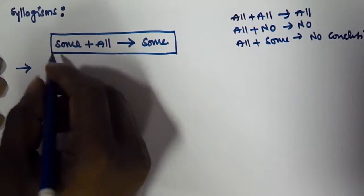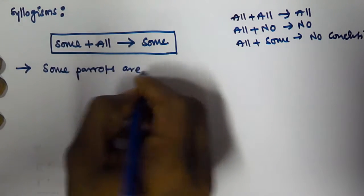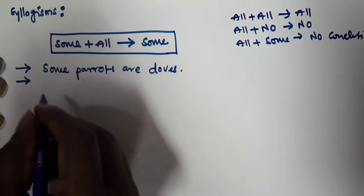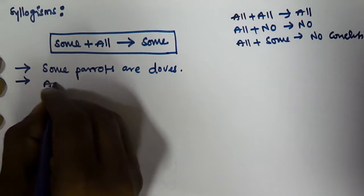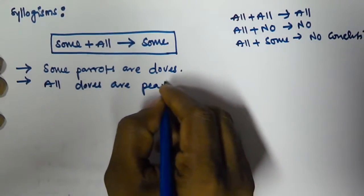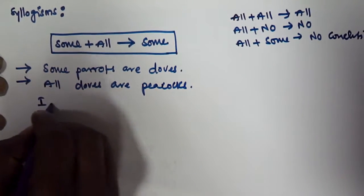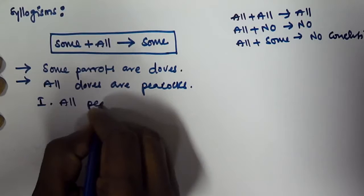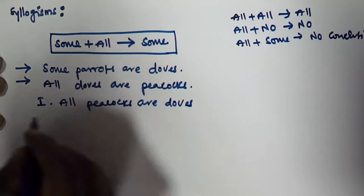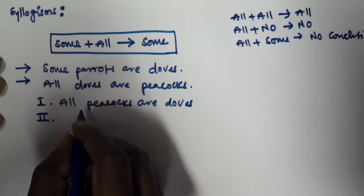Let us consider two syllogism statements. The first one is: some parrots are dogs. The second one is: all dogs are peacocks. The first conclusion given is: all peacocks are dogs.